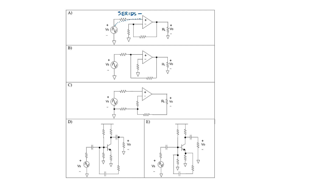On the output side, if I start at the load resistor and walk back towards the amplifier, I cross the feedback path — this is shunt. In circuit B, I cross the feedback path at the input side, so this is shunt. And I cross it at the output side too. This amplifier has the shunt-shunt feedback configuration.